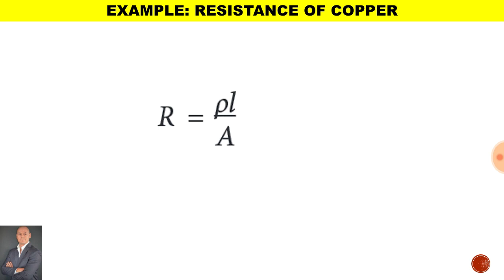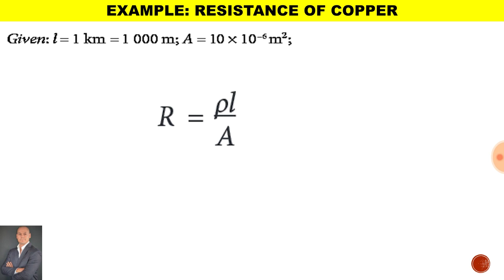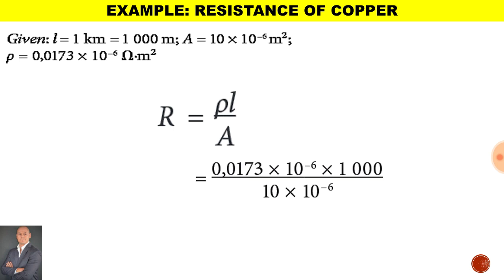Our next example is to calculate the resistance of copper. We've been given a length of one kilometre of copper conductor, which means it is 1000 metres. The cross-sectional area of the copper cable is 10 times 10 to the minus 6 metres squared, and the resistivity is 0.0173 times 10 to the minus 6. Substituting those values, we get a resistance of 1.73 ohms.